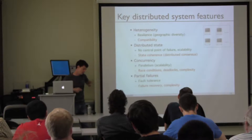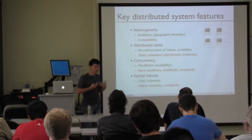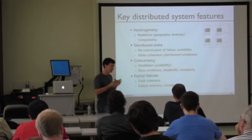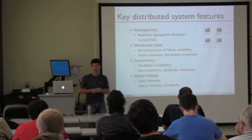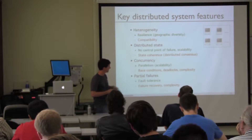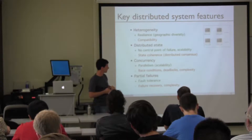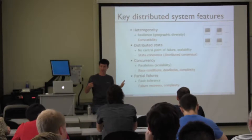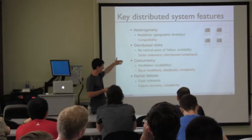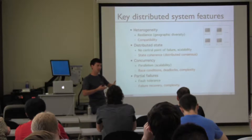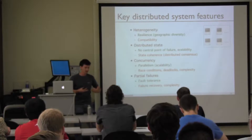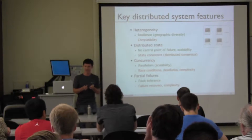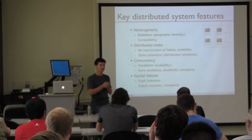The second feature is distributed state. One reason people use distributed systems is that you have no central point of failure — the state for your application does not reside within a single machine; it's smeared across different machines. This gives interesting fault tolerance and scalability: as you add more machines, you add more capacity to store state. On the other hand, when you have distributed state it's really difficult to keep it coherent and synchronized. State coherence requires complex synchronization protocols like distributed consensus to ensure local state is in accordance with the global view of the system.